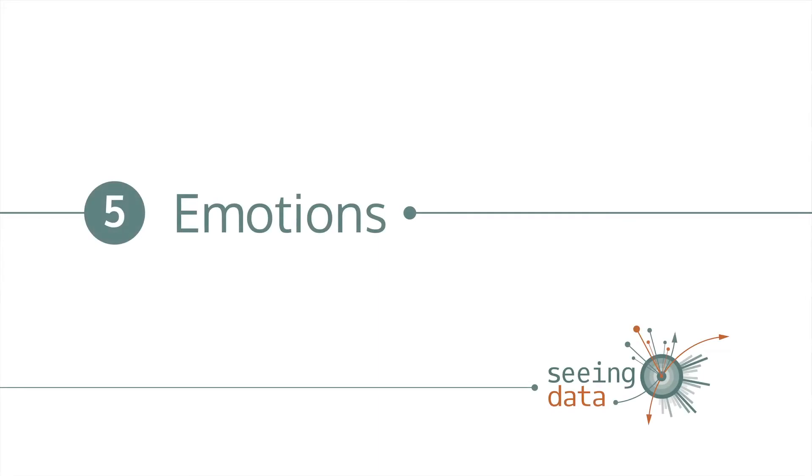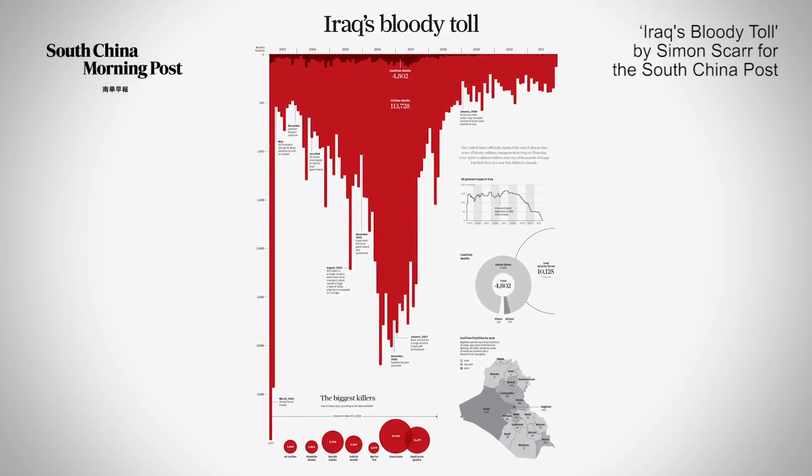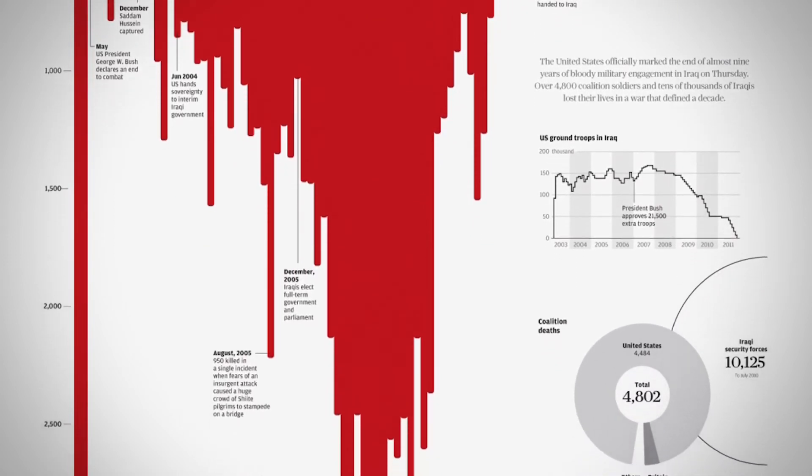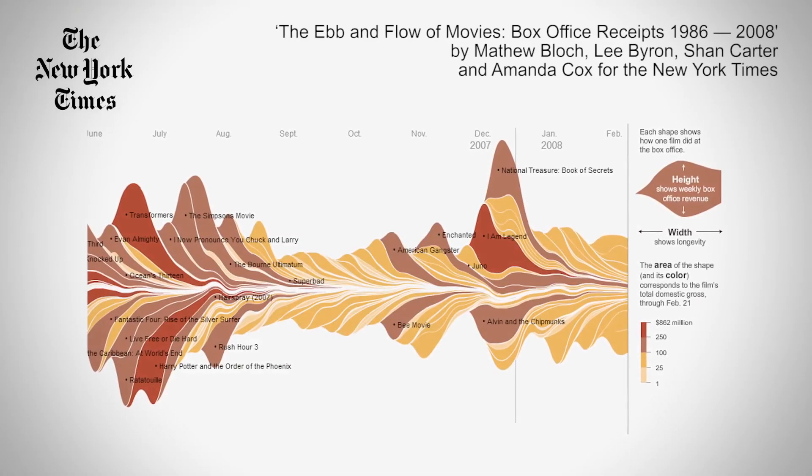Number five: emotions. The first impressions that you have when you glance at a visualisation are important in determining whether you decide to spend time looking and interrogating the data. You might have strong emotions relating to the subject matter, the visual style or other factors. This visualisation of death rates in the Iraq war is powerful because of the choice to use blood red and to turn the bar chart upside down, giving a dripping effect. In our research, we found that some participants felt immediately confused when they first looked at some visualisations and this put them off exploring further. But sometimes they were drawn in by the visual style — this happened for a few participants in relation to this intriguing visualisation of film box office receipts. It's useful to be aware of the way emotions can affect your reading of a visualisation as it might help you to overcome initial emotional responses which put you off exploring further.